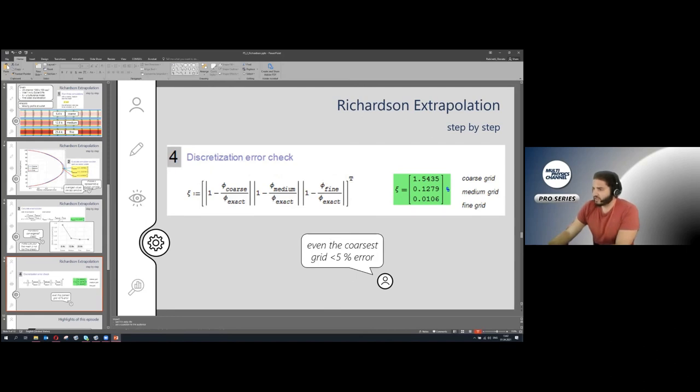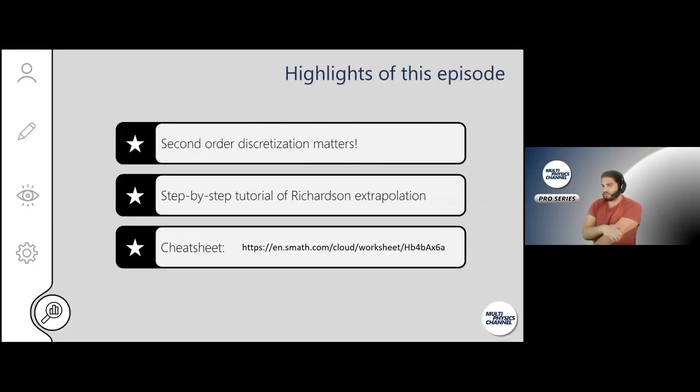All right, and that's already it. We are at the end of this episode. So what you learned today is that the second order discretization matters. You have seen how to perform a Richardson extrapolation step by step, and I've given you this cheat sheet which you can just use at your convenience. It's also a really nice tool to use, as Math. Maybe the people among you that know MathCAD—that has been discontinued—now is an open source tool called SMath. I love it, you just can perform calculations as you want.